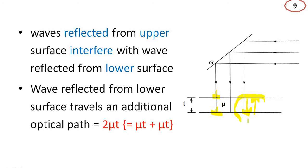The wave reflected from the lower surface travels an additional geometrical distance of 2 times the thickness t. The optical path is calculated by multiplying with the refractive index. So the wave reflected from the lower surface travels an additional optical path of 2 mu t.